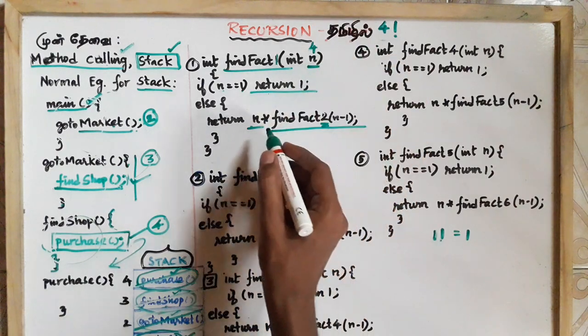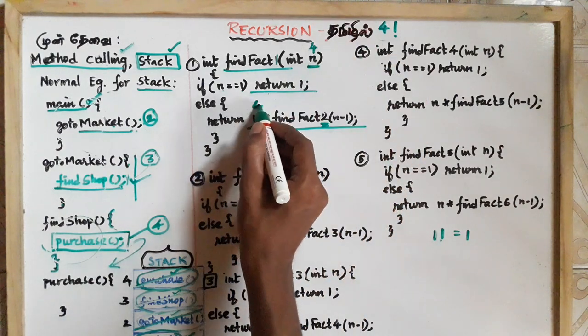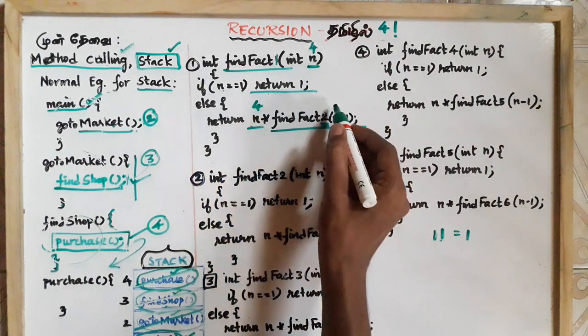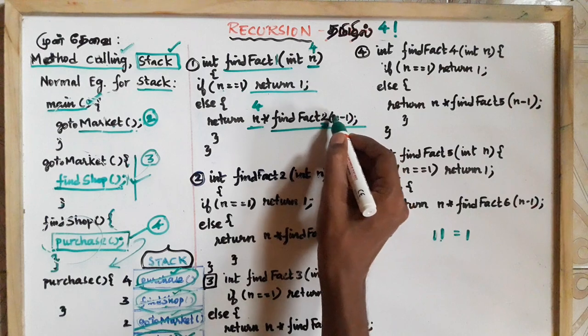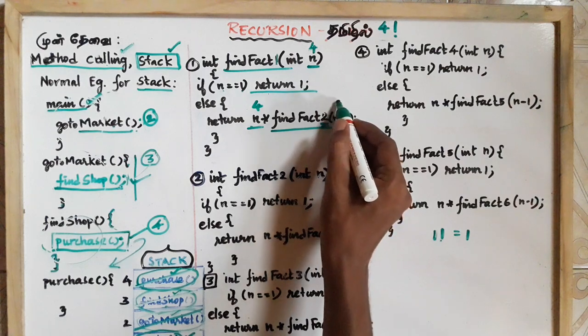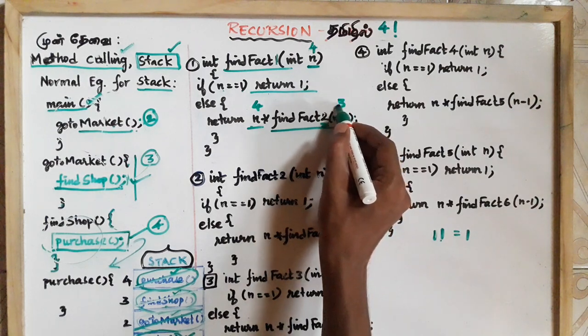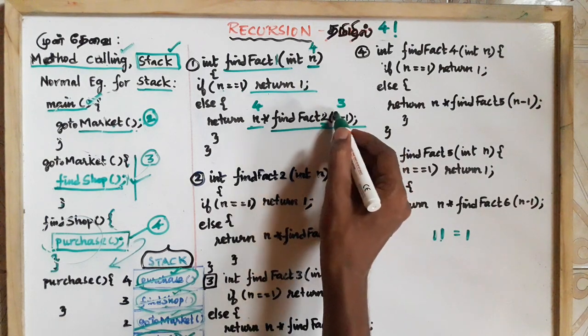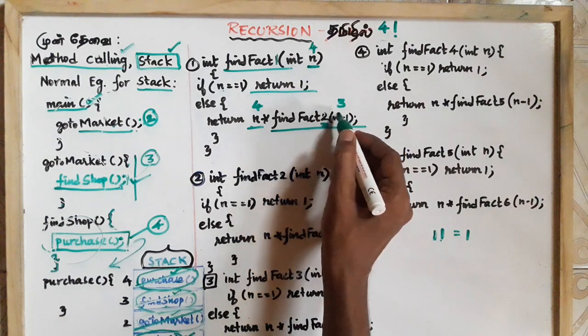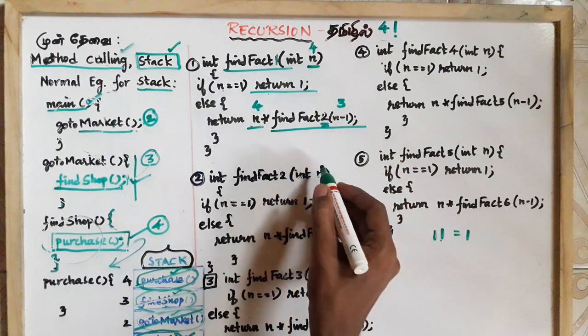Now the value is 4. We know that: 4 into findFact of n-1. Since 4-1 is 3, we call findFact of 3.